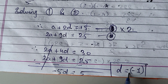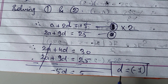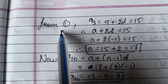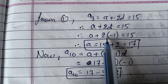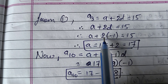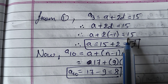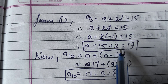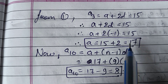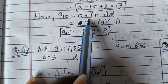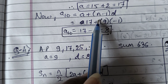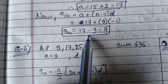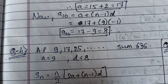Solving by elimination: (2A + 4D = 30) minus (2A + 9D = 25) gives D = −1. Substituting D = −1 into Equation 1: A + 2(−1) = 15, so A = 17. Then A10 = A + 9D = 17 + 9×(−1) = 17 − 9 = 8.